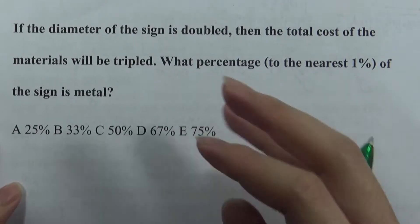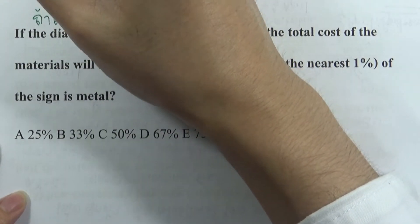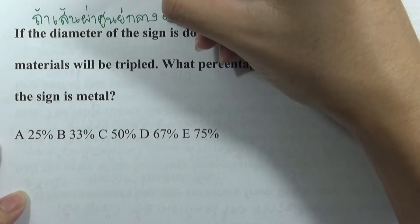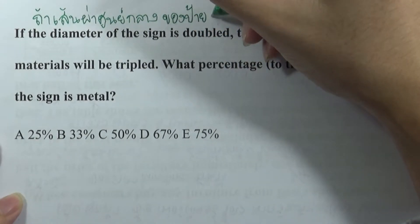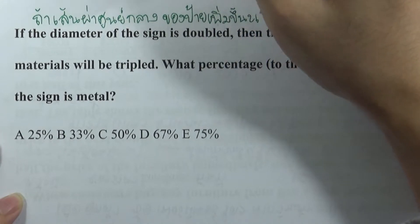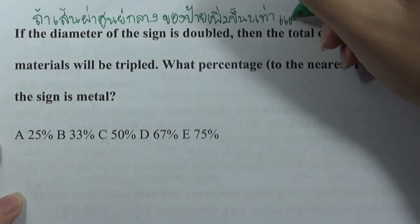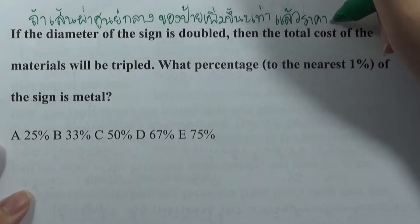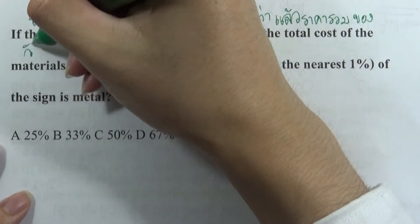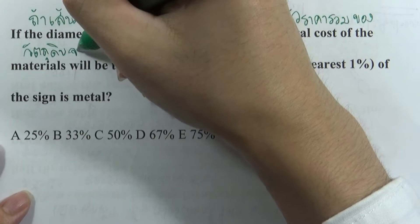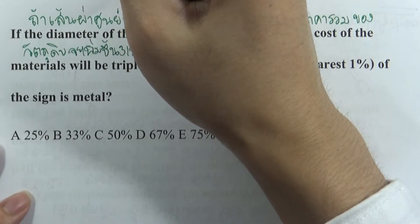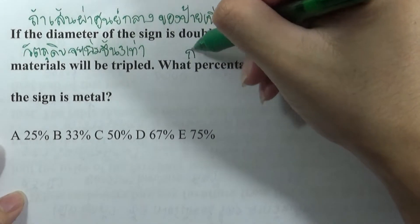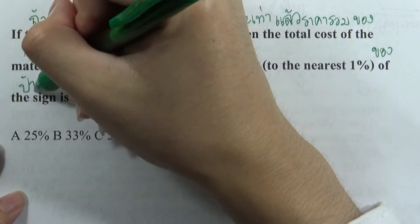If the diameter of the sign is doubled — ถ้าเส้นผ่าศูนย์กลางของป้ายเพิ่มขึ้นสองเท่า — then the total cost of the material will be triple — ราคารวมของวัตถุดิบจะเพิ่มขึ้นสามเท่า. What percentage of the sign is metal? — กี่เปอร์เซ็นต์ของป้ายเป็นเหล็ก?